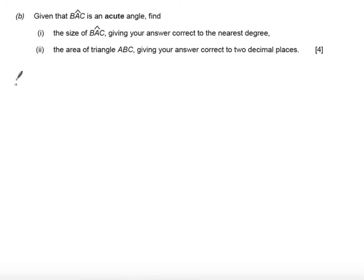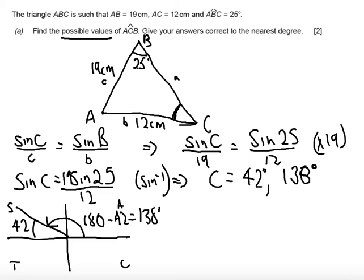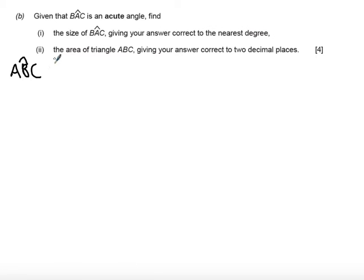So at this point we must say that we know ABC. That was the angle that was given to us which is 25 degrees. Angle ACB must be our obtuse angle. So that's 138 degrees.